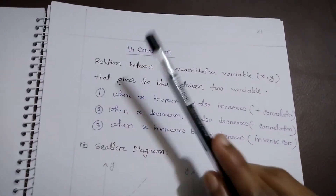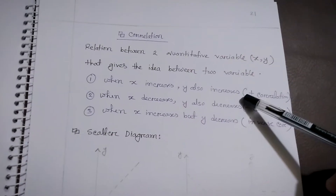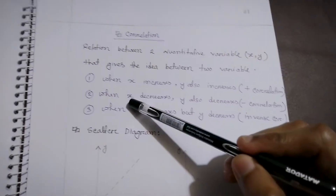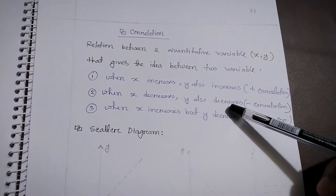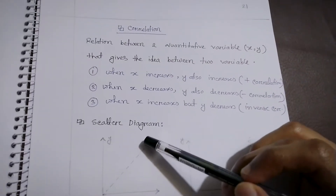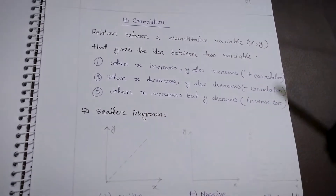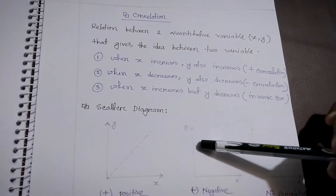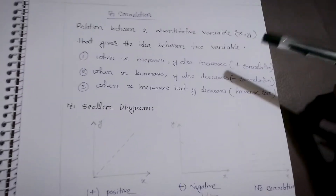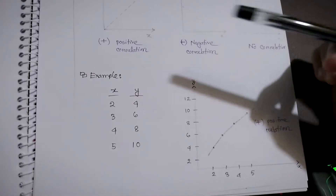The third type is no relation — there is no relation between those two variables. In correlation we find the relationship between two quantitative variables. When x increases and y also increases, it is positive correlation. When x decreases and y also decreases, it is negative correlation. When x is increasing but y is decreasing, that is an inverse correlation between them.